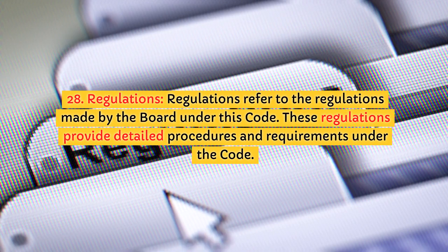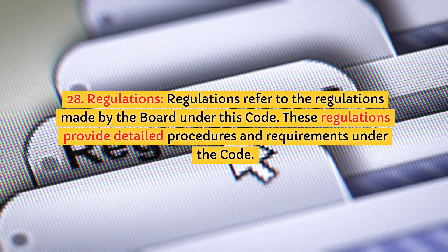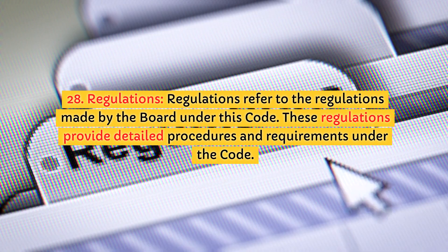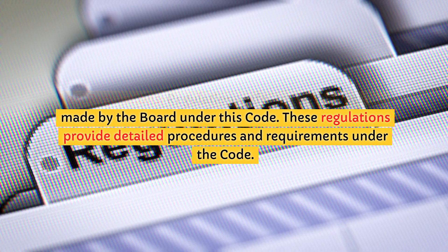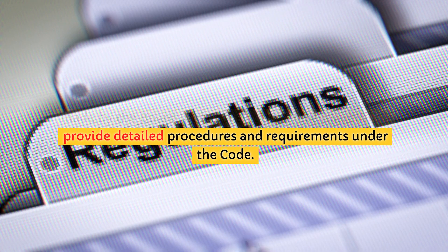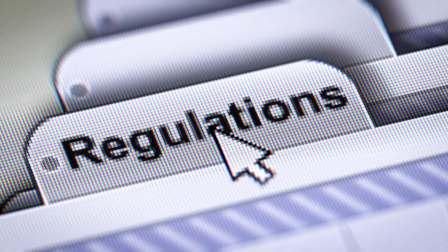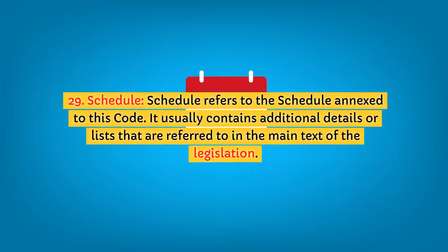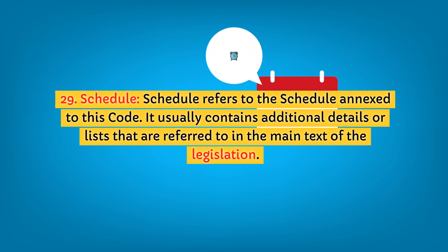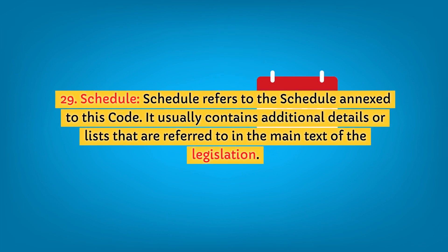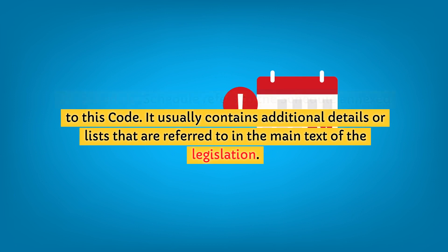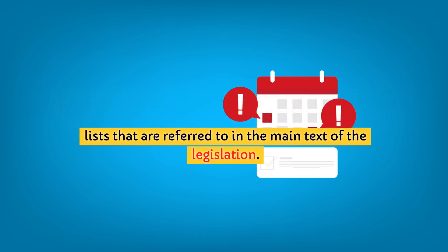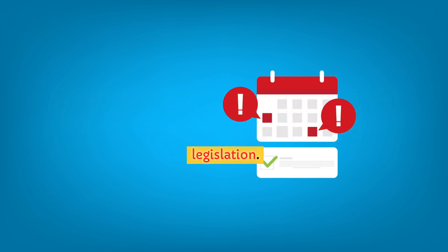28. Regulations. Regulations refer to the regulations made by the board under this code. These regulations provide detailed procedures and requirements under the code. 29. Schedule. Schedule refers to the schedule annexed to this code. It usually contains additional details or lists that are referred to in the main text of the legislation.